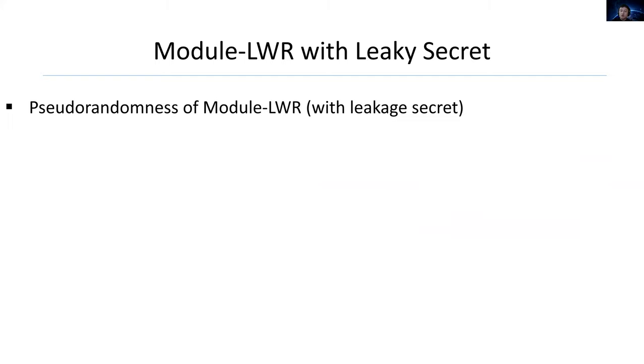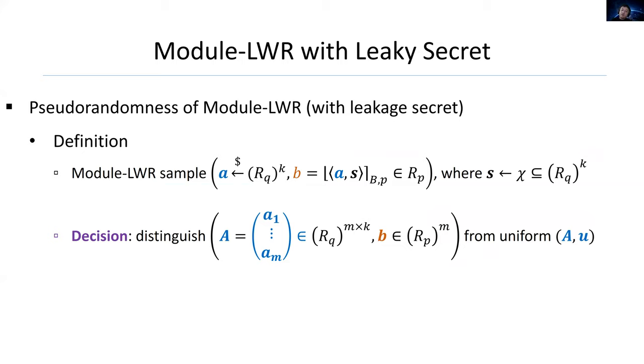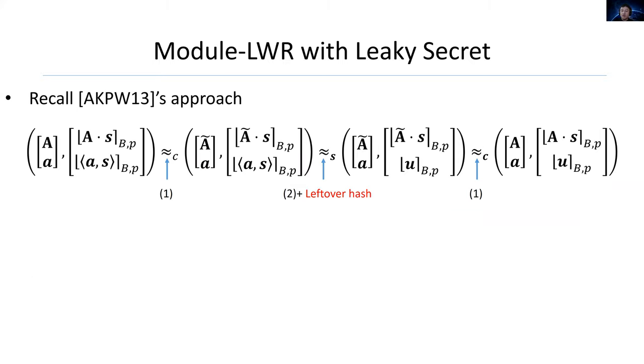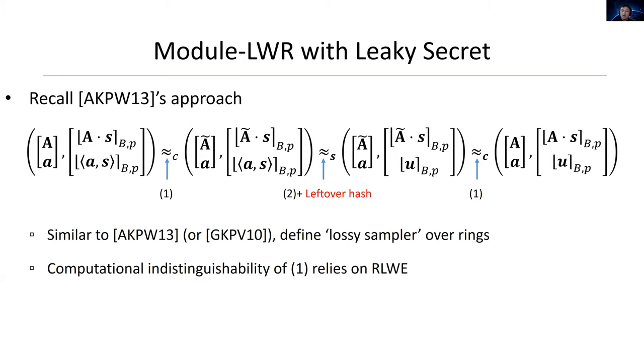Actually, S has no information on J's complement J-bar or completely leaks on J-bar. High level is that J is sub-lattice of R, and J is more sparse than R. So large perturbation over R is relatively small to J·LWR. And then we can apply Babai's algorithm to decode the perturbation. From this part, we introduce our new hardness result of module LWR. Module LWR is defined as follows. We want to show a reduction from decision ring LWE to decision module LWR even with leakage. Let's recall AKPW's approach again. We can generalize it to the ring setting as follows. Similar to AKPW, we can define the lossy sampler over rings. And the computational indistinguishability of step 1 relies on ring LWE.